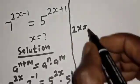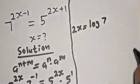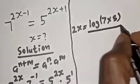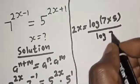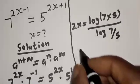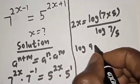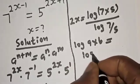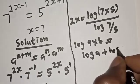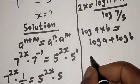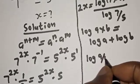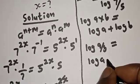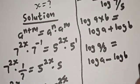2s is equal to log 7 multiplied by 5 over log 7 over 5. Take note of this rule: if you have log a times b, this is equal to log a plus log b. Also, if you have log a over b, this is equal to log a minus log b.